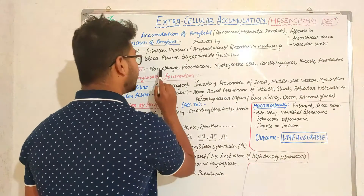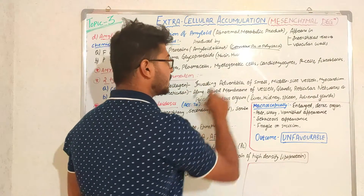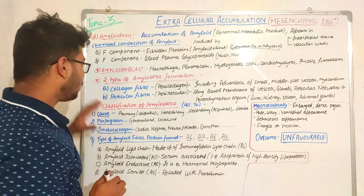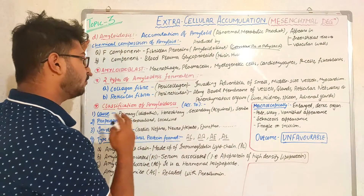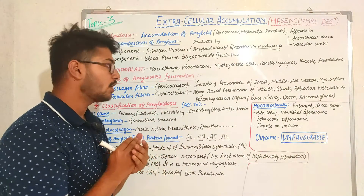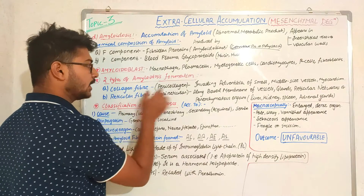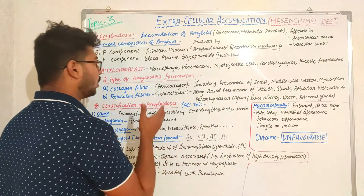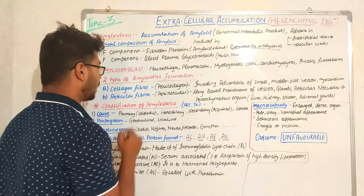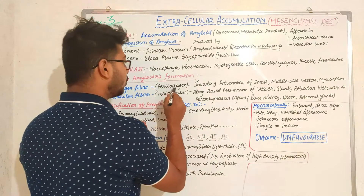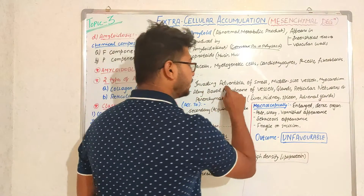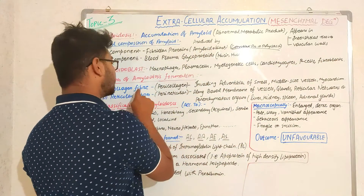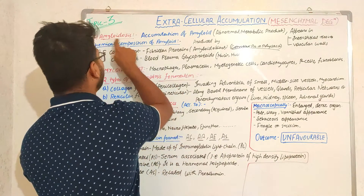The amyloidoplasts that produce these proteins are macrophages, plasma cells, myelogenous cells, cardiomyocytes, and beta cells of the pancreas or fibroblasts. Amyloidosis can be of two types according to its formation: if attached with collagen fiber it is called pericollagen amyloidosis, and if attached with reticular fiber it is called perireticular amyloidosis. In pericollagen amyloidosis it invades the adventitia of small and medium-sized vessels.